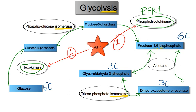Some quick facts about glycolysis: glycolysis happens in the cytosol, or cytoplasm, and it does not require oxygen — so aerobic, anaerobic, and fermentation processes all involve glycolysis. It requires two ATP as an investment. The first ATP is used during the conversion of glucose to glucose-6-phosphate by hexokinase; the second is used during the conversion of fructose-6-phosphate to fructose-1,6-bisphosphate by PFK-1.